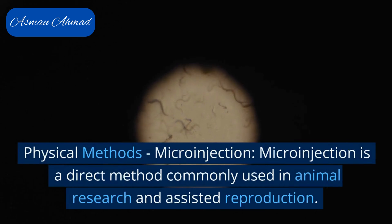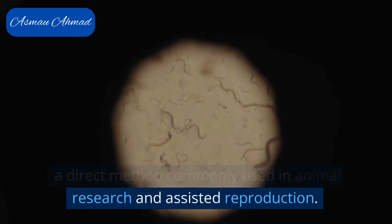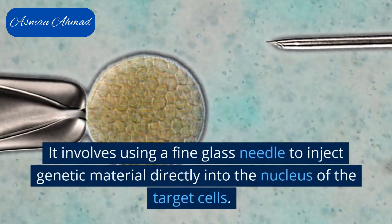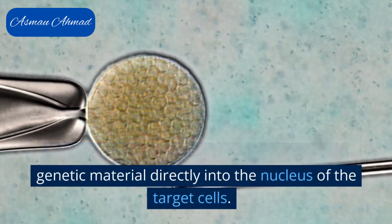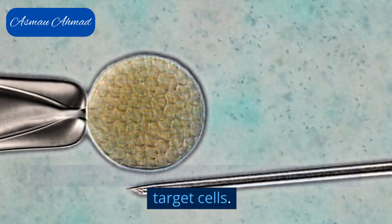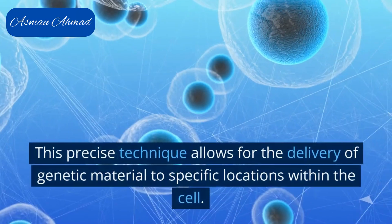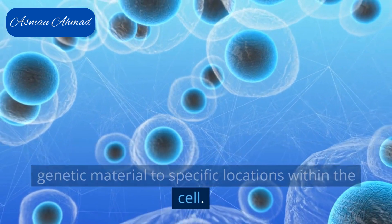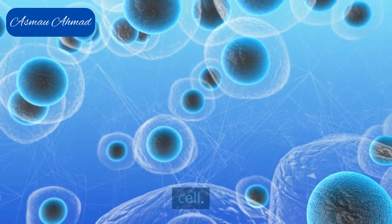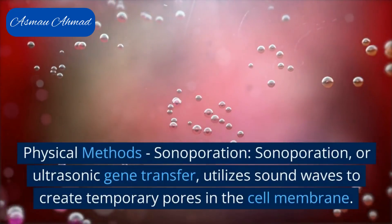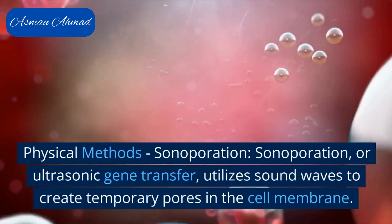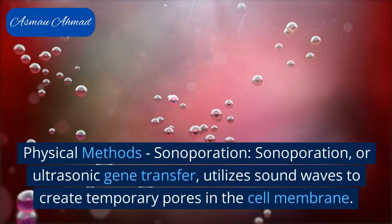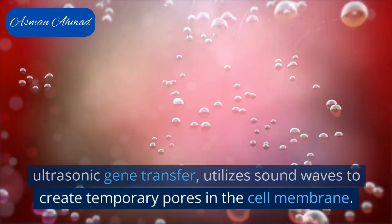Micro injection is a direct method commonly used in animal research and assisted reproduction. It involves using a fine glass needle to inject genetic material directly into the nucleus of the target cells. This precise technique allows for the delivery of genetic material to specific locations within the cell.